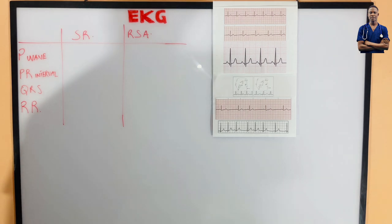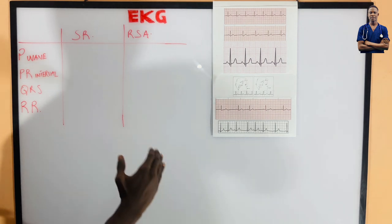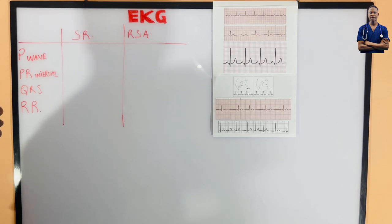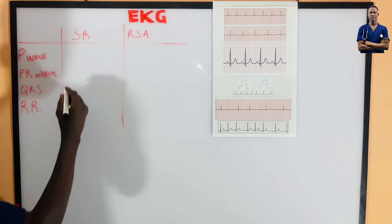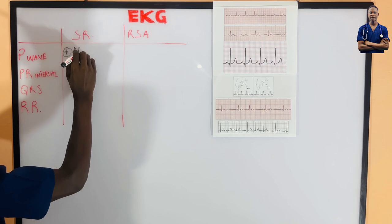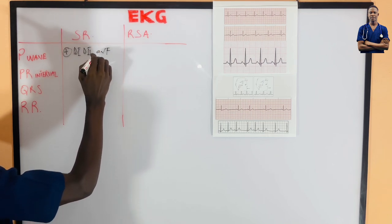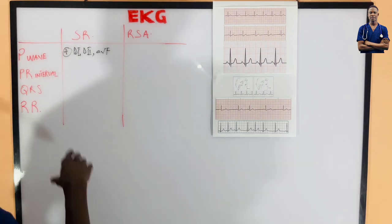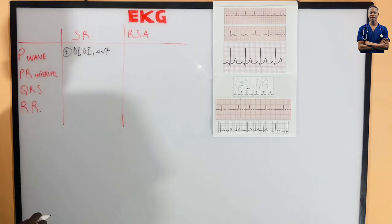For sinus rhythm, before you can identify it, you must know the state of the P wave. For sinus rhythm, the P wave must be positive in leads D1, D2, and AVL — the P wave must be positive in those leads.